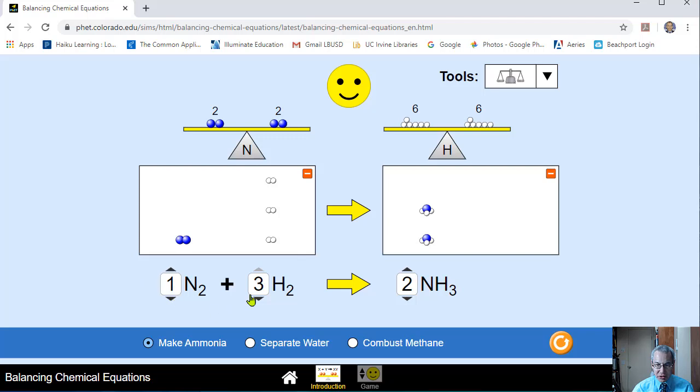This is the balanced equation. These are the coefficients. One nitrogen molecule N2. Three diatomic hydrogen molecules. Make two ammonia molecules NH3.